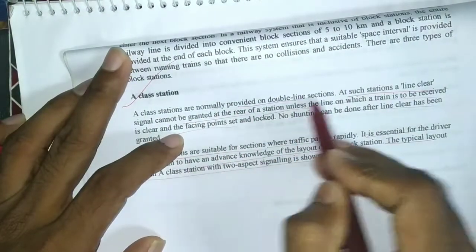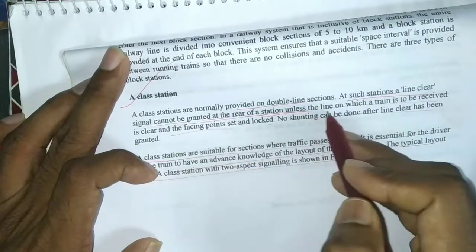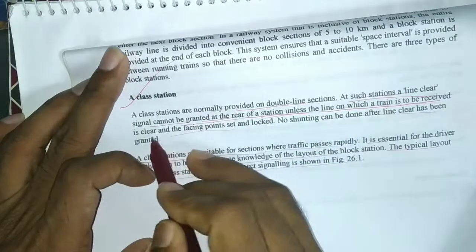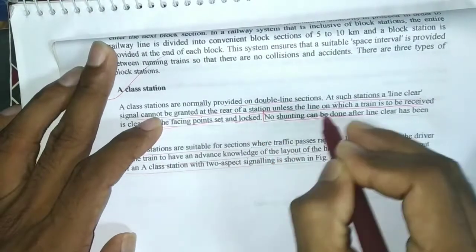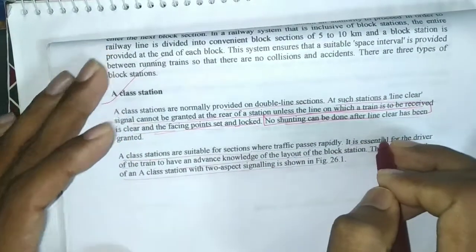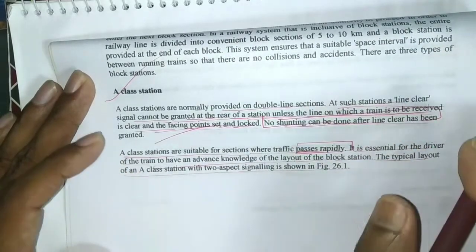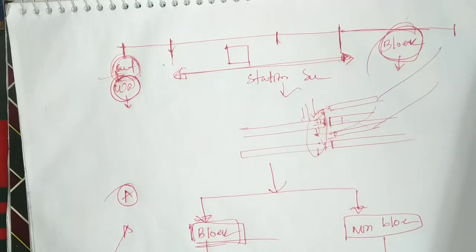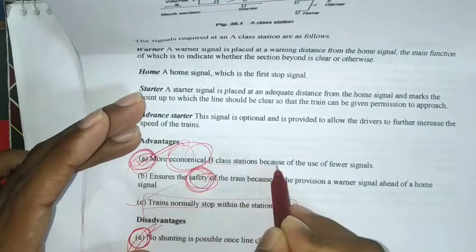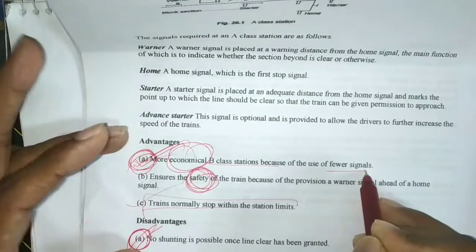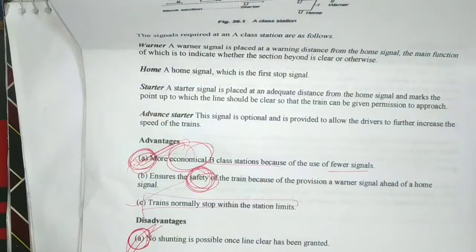This station is a normal provider on a double line section. Line clear signal cannot be granted at the rear of a station unless the line on which the train is to be received is clear, the facing points are set and locked, and no shunting can be done after line clear has been granted. The signal has given a number of advantages seen at the front of a station — it is more economical.